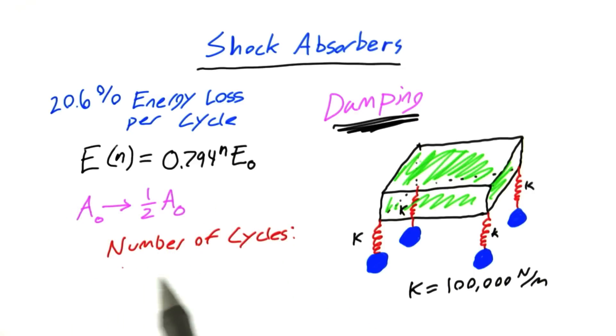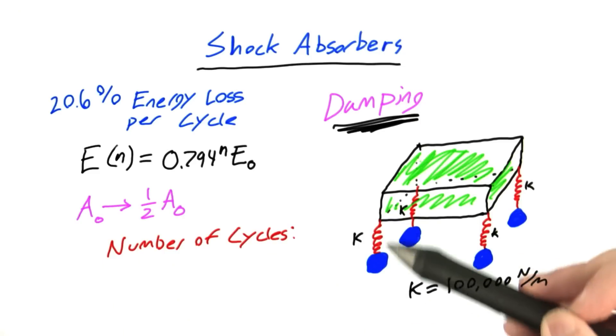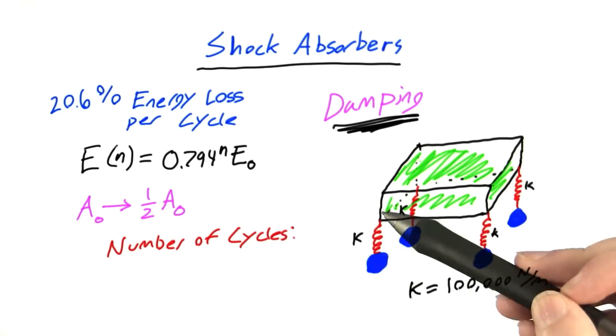My question for you is, how many cycles does it take, what's this value n, in order for the amplitude to decay to one-half of its original value? If, for example, you said the answer was 4, that would mean that after four complete oscillations, after four cycles, the amplitude of this oscillation would be reduced to one-half its original value.